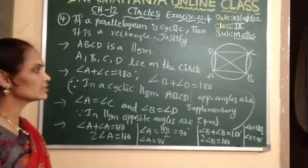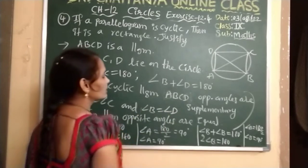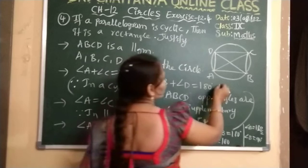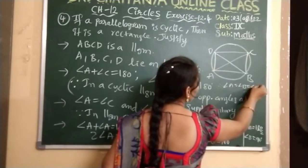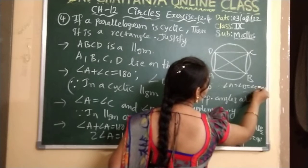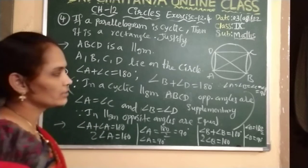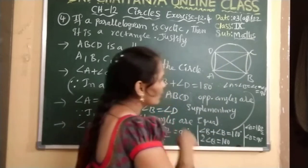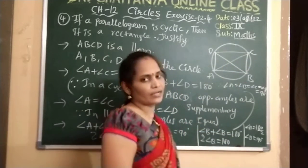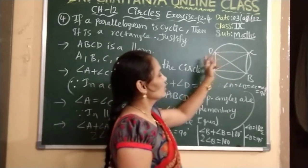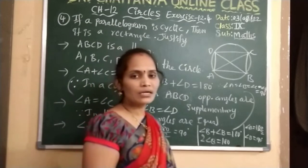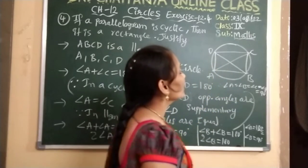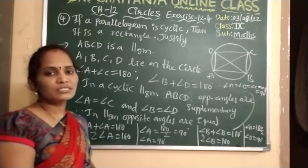Since opposite angles are equal, all angles A, B, C, and D are 90 degrees. In any figure where all angles are 90 degrees, it is a rectangle. In a rectangle only, all angles are 90 — angle A 90, angle B 90, angle C 90, angle D also 90. So based on that result, we can say ABCD is a rectangle.